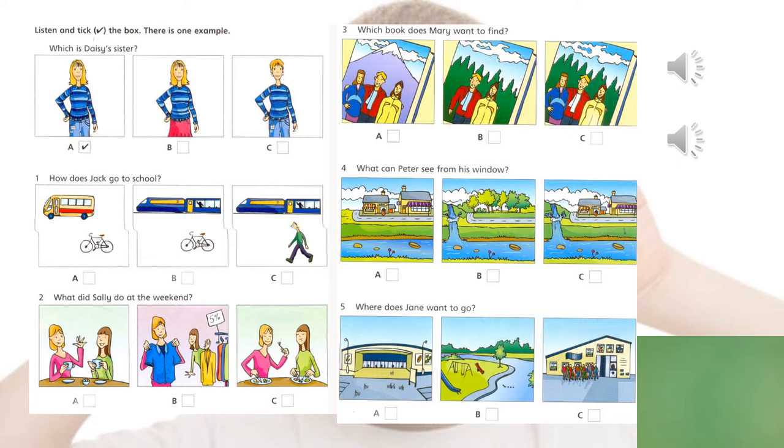Okay, the next exercise. This one is very easy guys, you just have to tick the correct answer. Listen and tick the box. There is one example. Let's listen to that example first. Part four. Look at the pictures. Listen and look. There is one example.